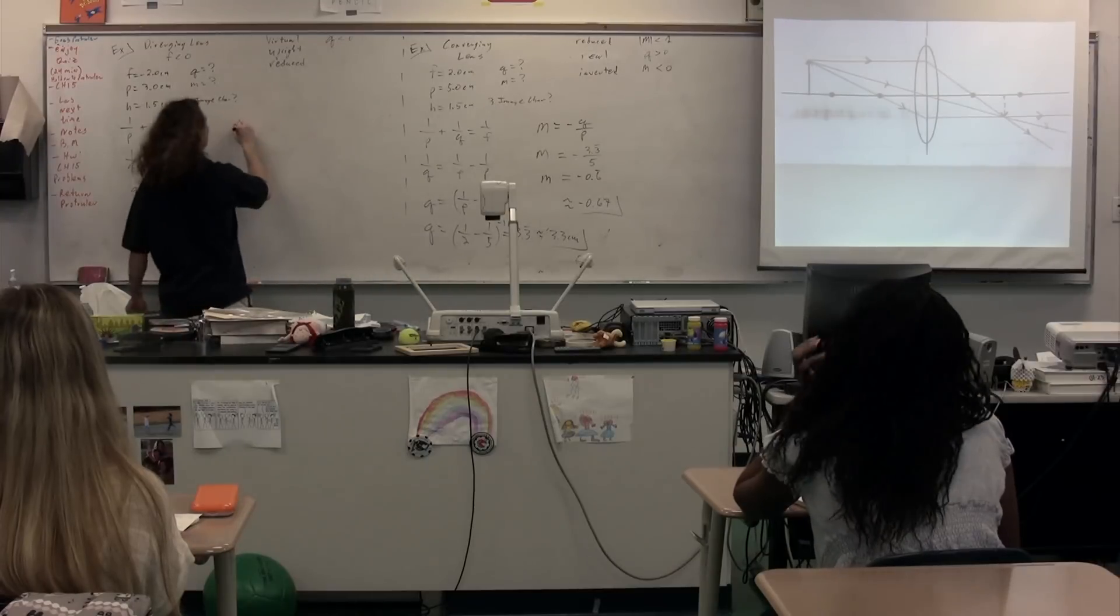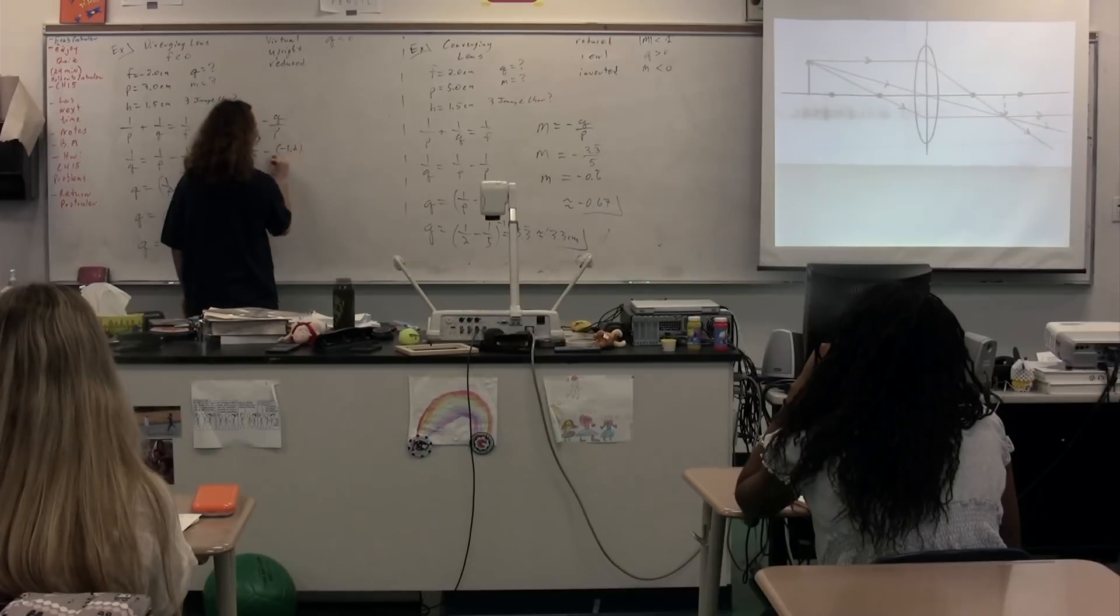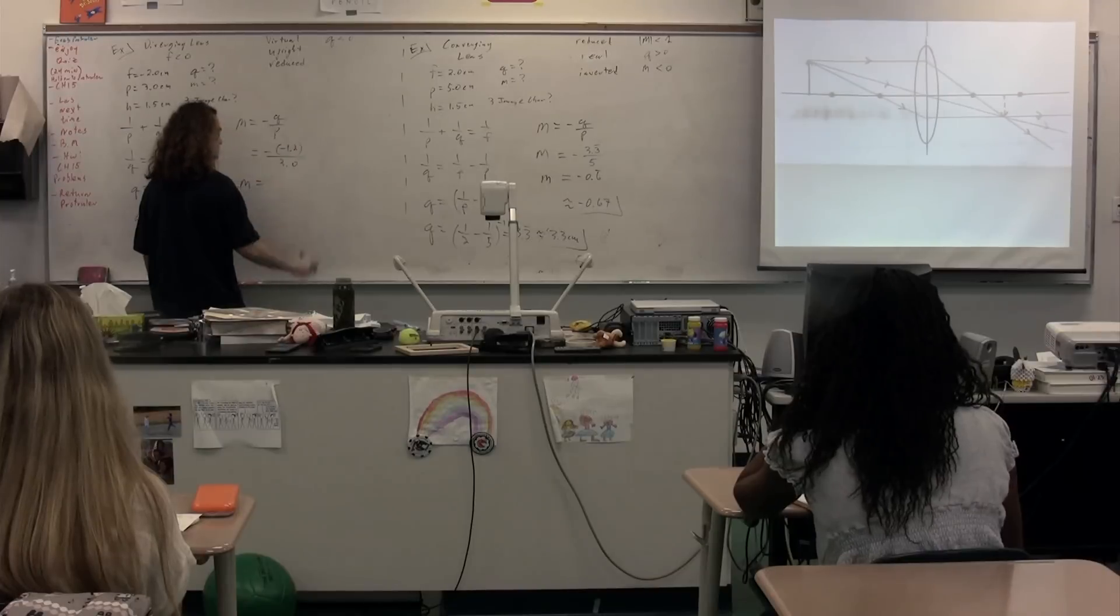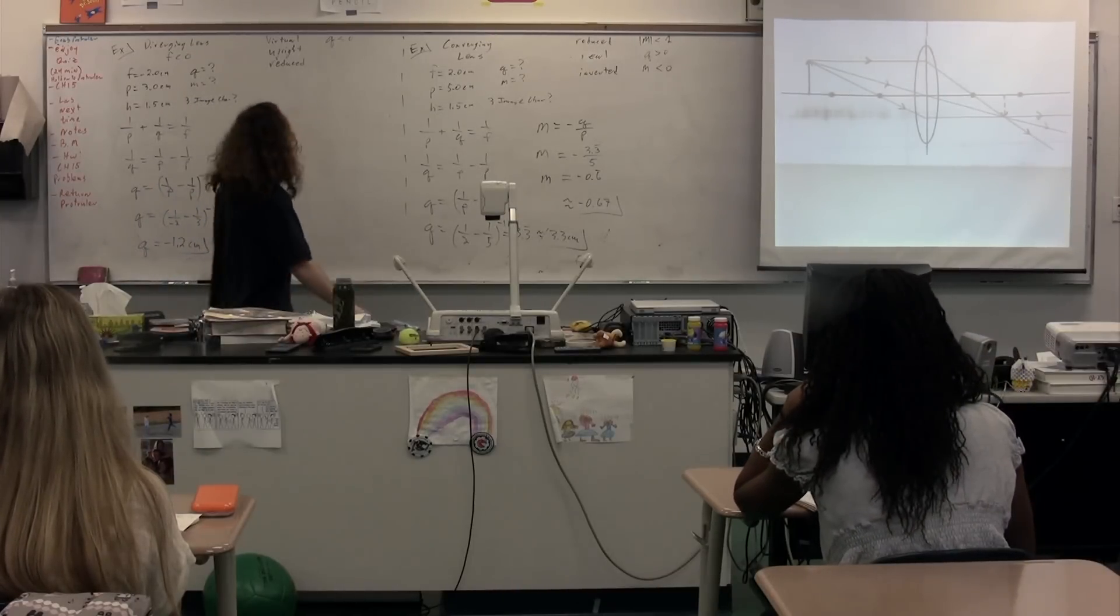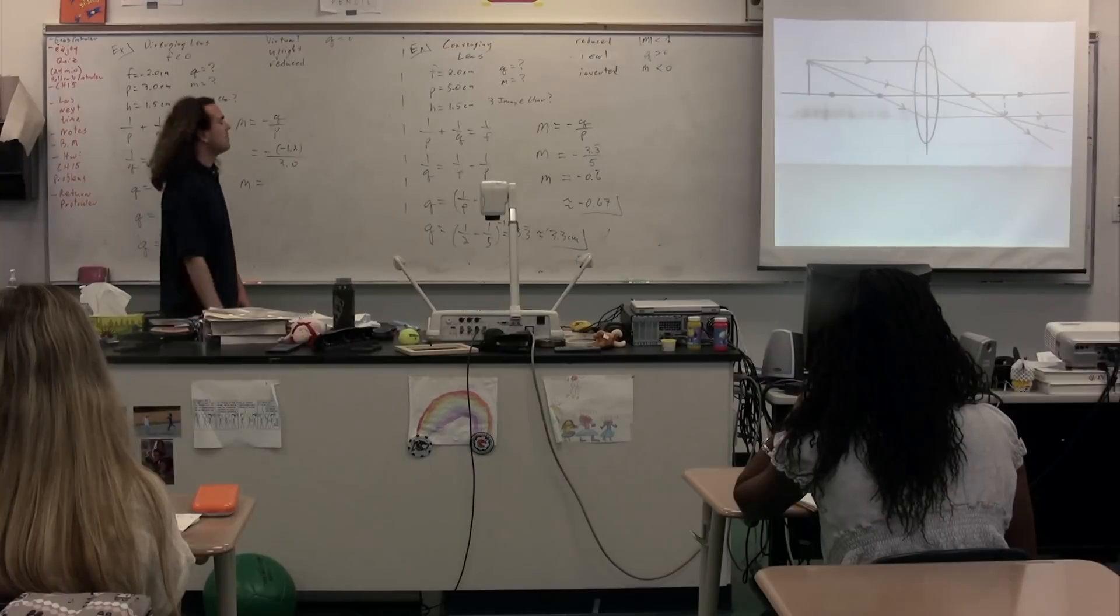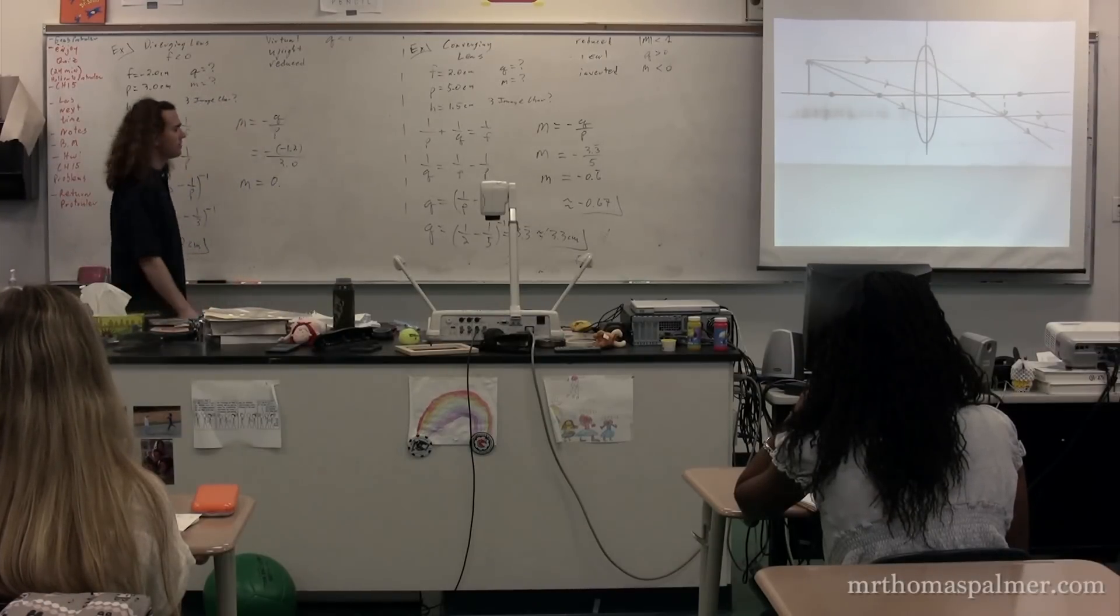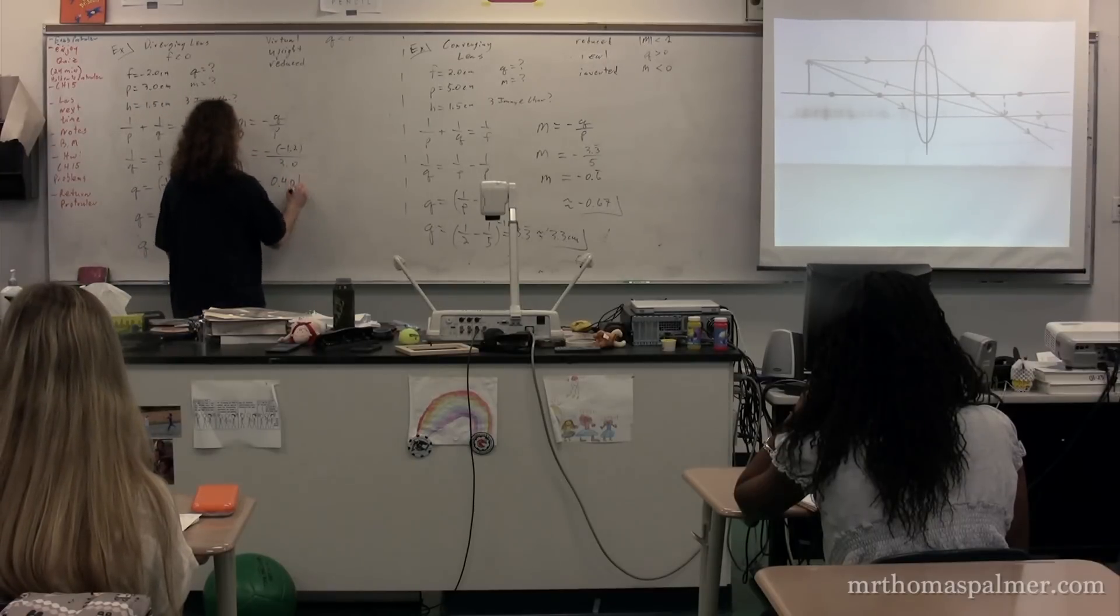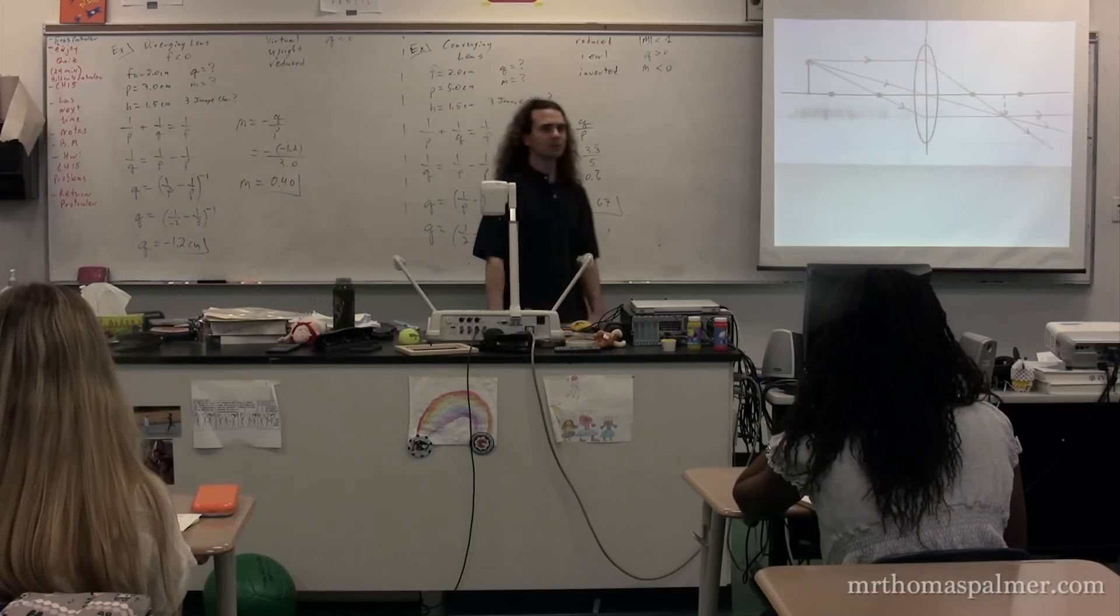We can figure out now the magnification. Magnification equals the negative of the image distance over the object distance, or negative of negative 1.2 divided by the object distance, which is 3 and not 5. The magnification is equal to you, please. Exactly. Yeah. Okay. 0.40 is our magnification.